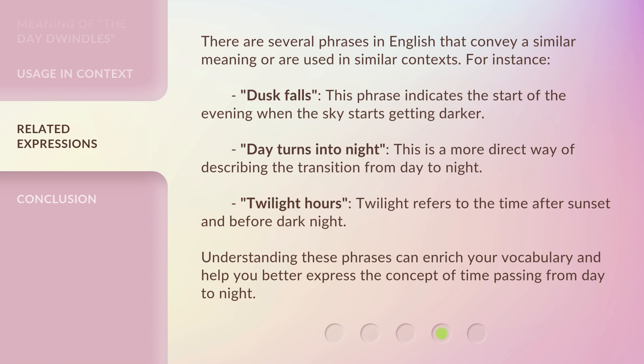Twilight hours — twilight refers to the time after sunset and before dark night. Understanding these phrases can enrich your vocabulary and help you better express the concept of time passing from day to night.